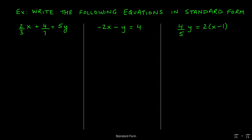Let's say we're asked to write the following equations in standard form. Remember that standard form requires the equation to look like ax plus by equals c, where a, b, and c have to be integers, and a in particular has to be a positive integer. So no fractions allowed, no decimals allowed, the coefficients of x and y and the constant by itself have to be integers, where the coefficient of x has to be a positive integer.